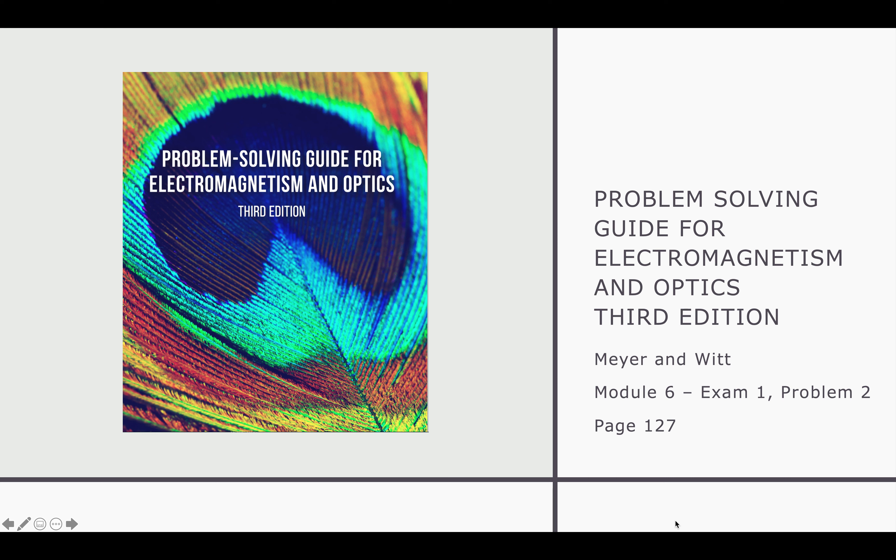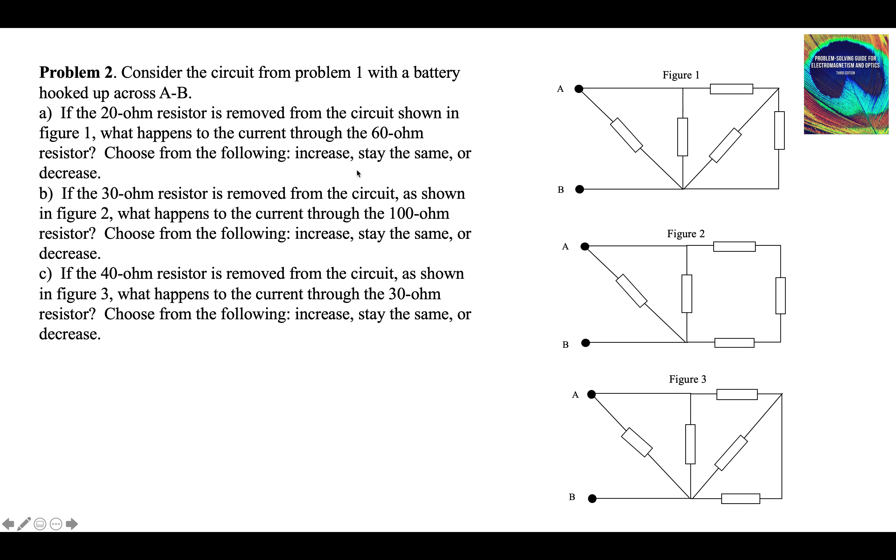This is Problem 2 on Exam 1 of Module 6 in the book Problem Solving Guide for Electromagnetism and Optics. Problem 2. Consider the circuit from Problem 1, with a battery hooked up across AB.